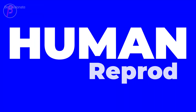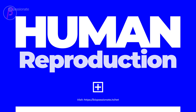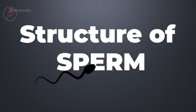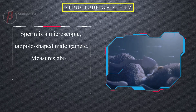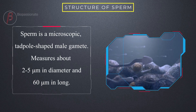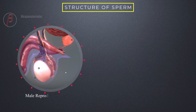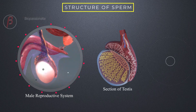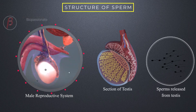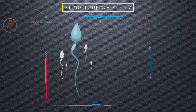This video explains the structure of sperm under the chapter human reproduction. A sperm is a microscopic tadpole-shaped male gamete, measuring about 2 to 5 micrometers in diameter and 60 micrometers in length. Sperms are formed and released from the male gonads called testes.